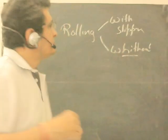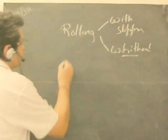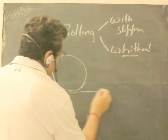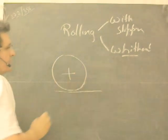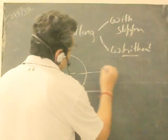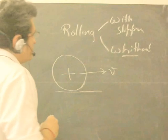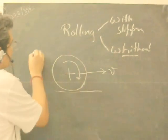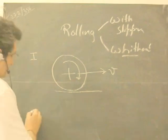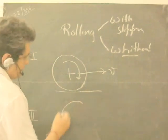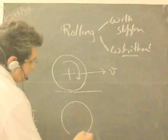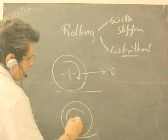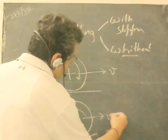Problems for the first condition: rolling with slipping. There can be a cylinder or a sphere. There is translational motion and rolling, and the rotational motion can be in this direction — that is one case. Case two is another case which is more difficult, where the rotation is in this direction and the initial velocity is in this direction.